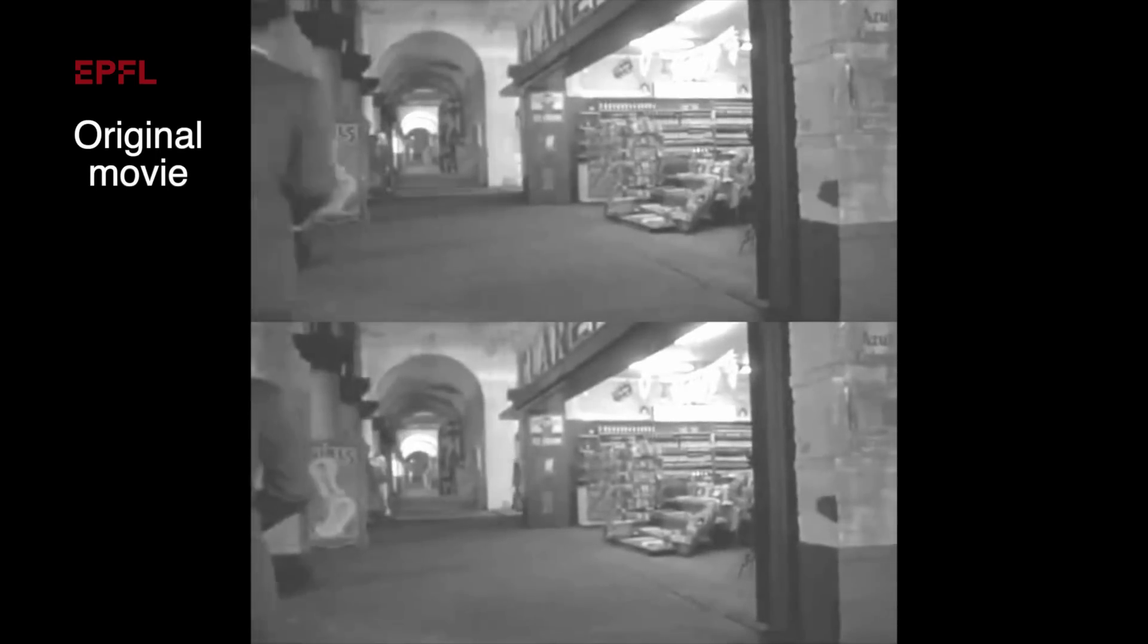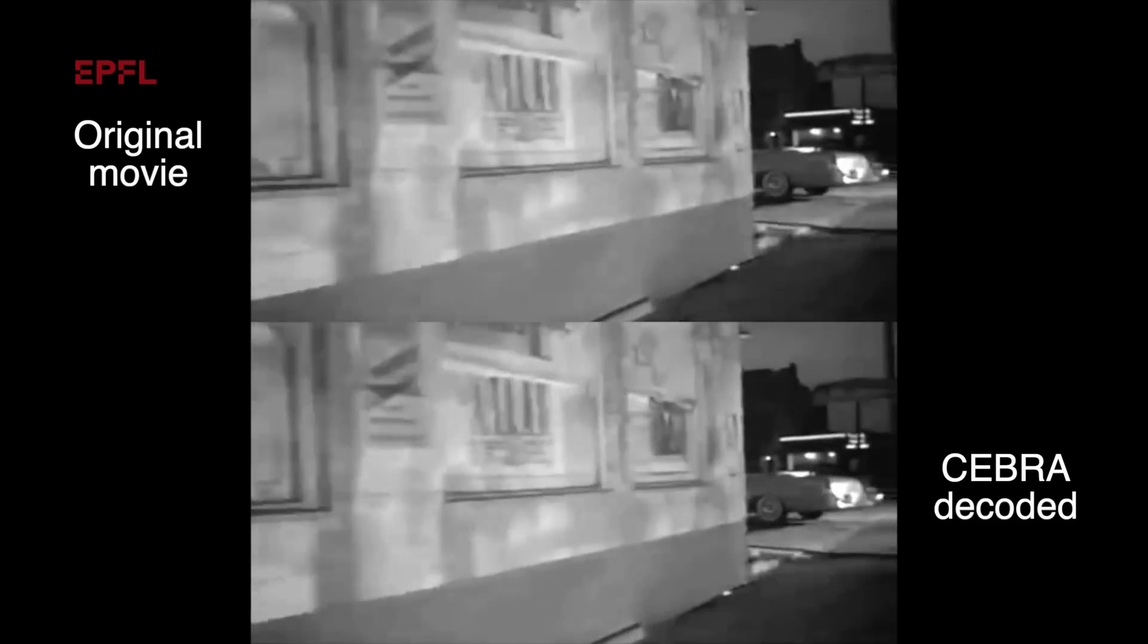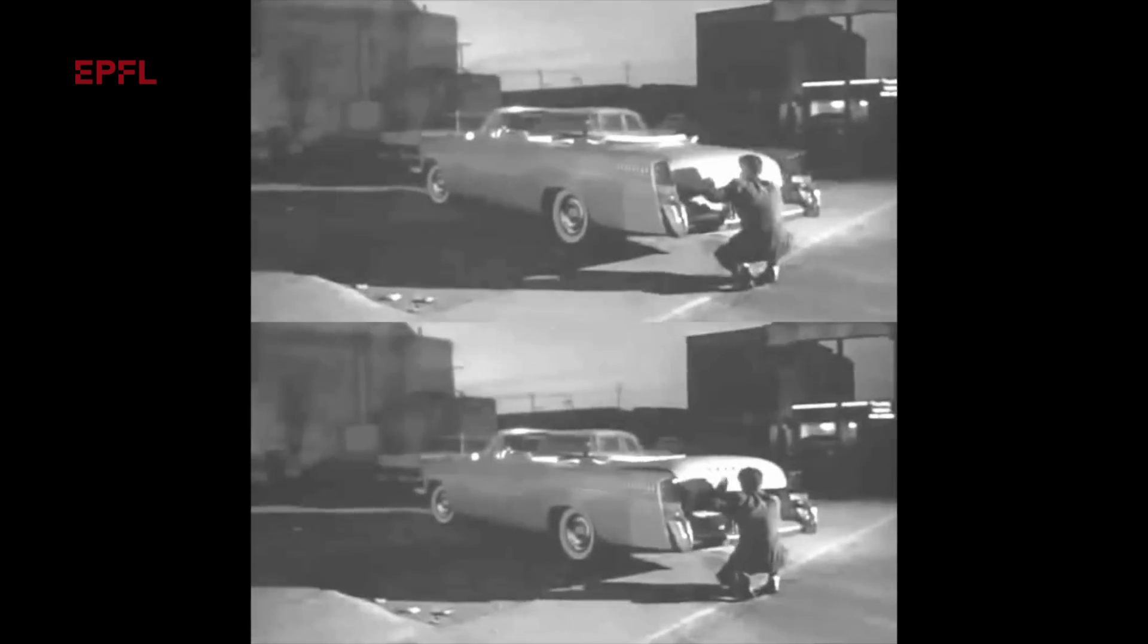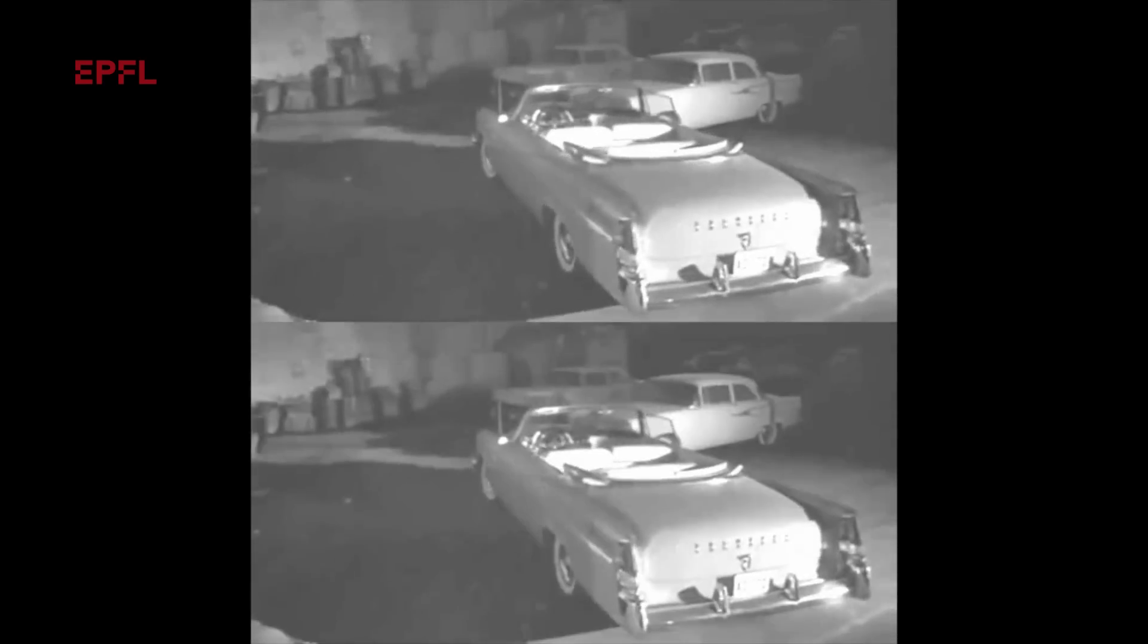When humans or even mice watch this movie, millions of neurons in their brain fire in response to different properties of the video—whether it's the objects, the color, the texture, or even the emotions that are invoked when watching and understanding this.